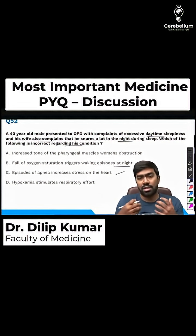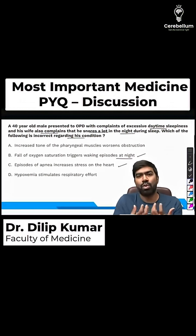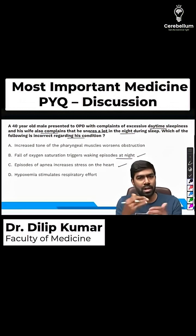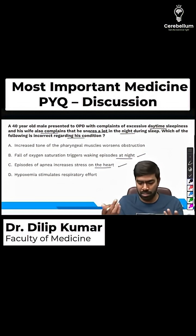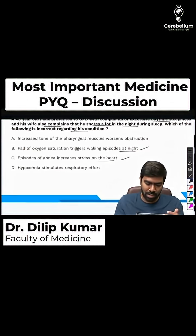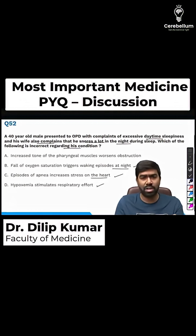Option C — episodes of apnea increase stress on the heart — is also correct. Because the apnea is due to obstruction, the patient puts in more inspiratory effort, which increases intrathoracic pressure. This alters the preload and afterload on the heart, putting definite stress on it. Long-term cardiac remodeling and cardiomyopathy are also common in these patients.